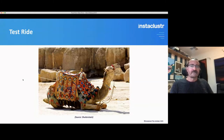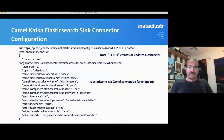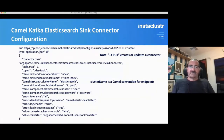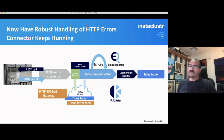I took one for a test ride. Here's an example of the Camel Kafka Elasticsearch sink connector configuration. There's a Camel-specific thing: you have to have a cluster name, which is the Camel convention for endpoints — it has nothing to do with Kafka Connect. It's a Camel thing and it wasn't all that obvious, but you had to have it for it to work. Having done that, we end up with a more robust pipeline that handles the HTTP errors and the connector keeps running — I don't need that hack of checking if they're running and restarting them.